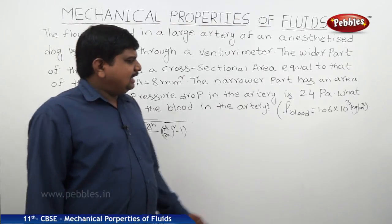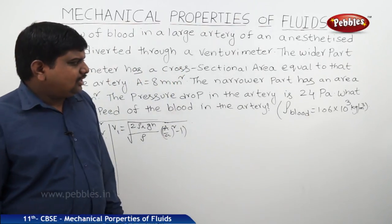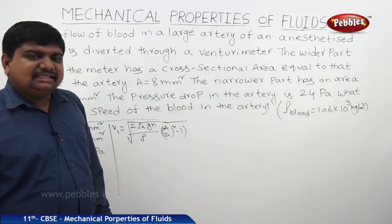Where ρ is equal to density of the blood, 1.06 × 10³ kg/m³.